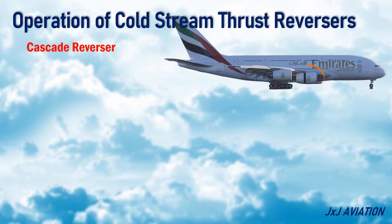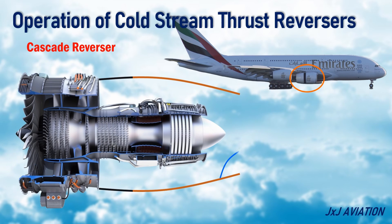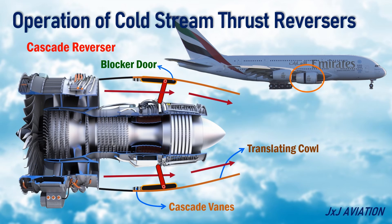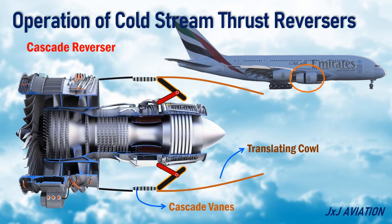In the Cascade Reverser, there is a translating cowl, blocker door, and cascade vanes. During normal operation, the cascade vanes and the blocker door are flush with the nacelle surface, allowing air to flow smoothly through the bypass section. The blocker door is connected to a link arm, whose other end is connected to a stationary section of the engine. When the reversers are required, a hydraulic actuator pushes the translating cowl towards the aft of the engine. The link arm then pulls down the blocker door and the cascade vanes are exposed. The blocker door blocks the bypass air, and the air is deflected forward via the cascade vanes, causing the thrust to be reversed.